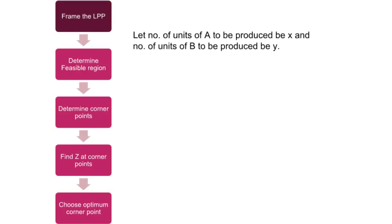Firstly, we frame the linear programming problem. Let number of units of A to be produced be X and number of units of B to be produced be Y. Since the objective is to maximize profit, the objective function we get is maximize Z equals 40X plus 30Y, as profit made on each unit of A and B is $40 and $30 respectively.